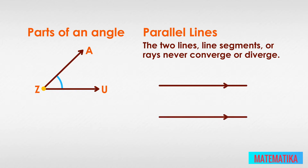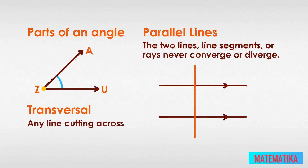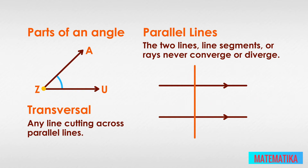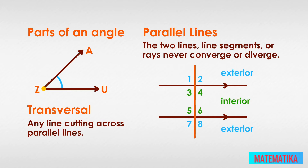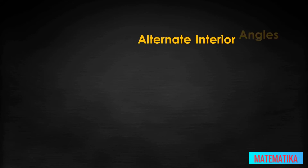Parallel lines can be intersected by transversals. Any line cutting across parallel lines is a transversal — it can cross at any angle. A transversal intersecting parallel lines at 90 degrees is perpendicular. When a transversal intersects parallel lines, it creates an interior and exterior, forming four angles at each parallel line, or eight angles altogether. Four of those angles are exterior and four are interior. Today we are interested in the four interior angles.